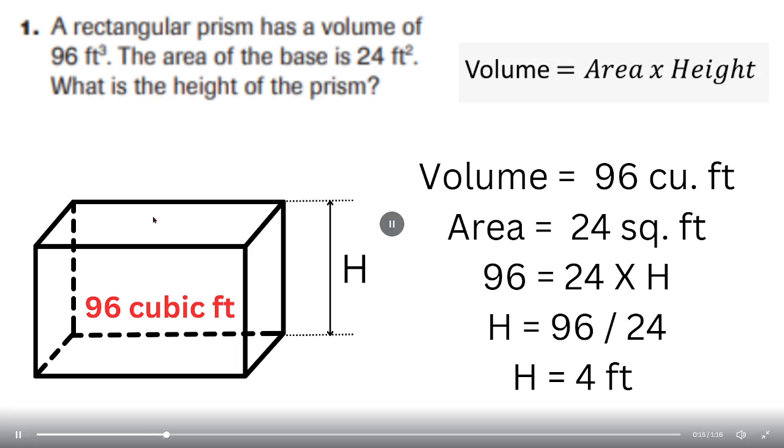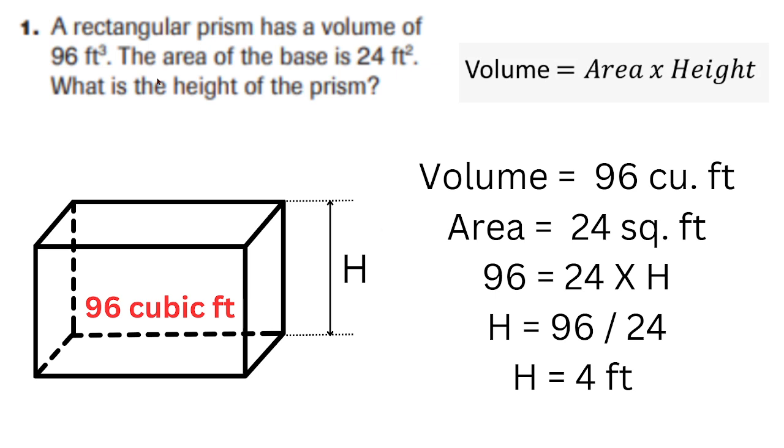A rectangular prism is a polyhedron with two congruent faces, the base and the top. In this case, the problem explains that the rectangular prism has a volume of 96 cubic feet. The area of the base is 24 square feet.